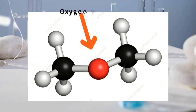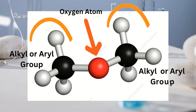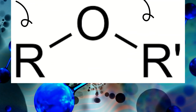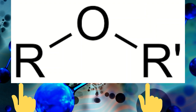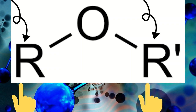Ether is an organic compound that contains an oxygen atom bonded to two alkyl or aryl groups. The general formula for ether is R-O-R, where R and R can be the same or different alkyl or aryl groups.